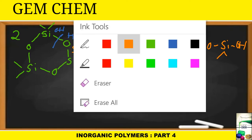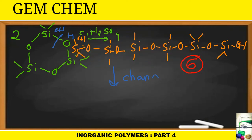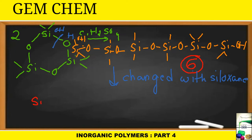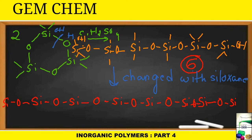We then charge this reaction with the siloxane dimer. When we charge this reaction with siloxane, we obtain our desired product containing eight silicon atoms. The two terminal silicons of the final product have three CH3 groups (coming from the siloxane ends), while each of the middle silicons contains two CH3 groups. This is how you can synthesize different silicon oils, and this comes in exams.